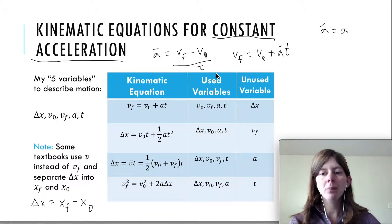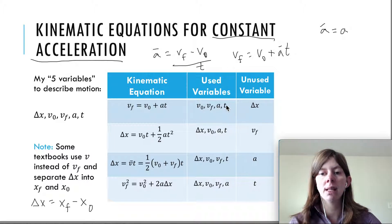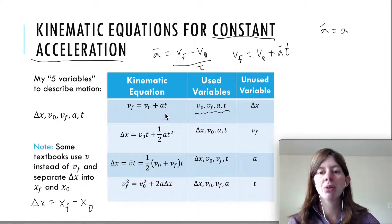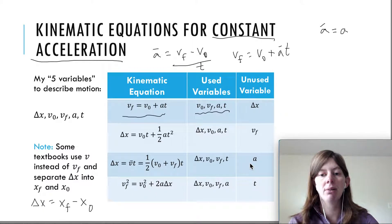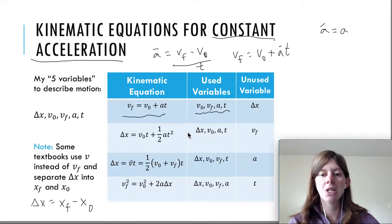For example, if you know three of these four variables — V initial, Vf, a, and t — and you're looking for the fourth, then you use the first kinematic equation because it's the only one that has all four. That means the problem does not involve delta x. Likewise, the second equation doesn't involve final velocity, the third doesn't involve acceleration, and the fourth doesn't involve time. If you don't care about V initial, then you'll need to use a combination of two equations to solve your problem.